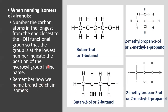The other isomers come from branching, which is why we need to apply the branch-chain naming concept. The OH group still takes the lowest possible number. Looking at a branched example: the OH is on the first carbon, so we count one, two — the branch is on the second carbon.